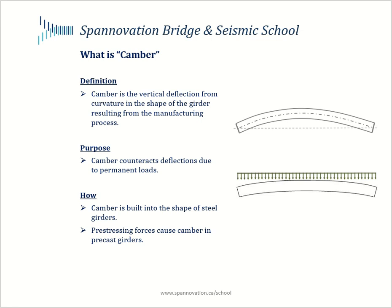In this tutorial we'll understand camber as it pertains to bridge girders from a qualitative perspective. Camber is the vertical deflection from curvature in the shape of the girder resulting from the manufacturing process. Direct your attention to the visual on the left, which shows the elevation view of a girder and a horizontal datum line from which you can measure the vertical deflections of the center of gravity of the girder.